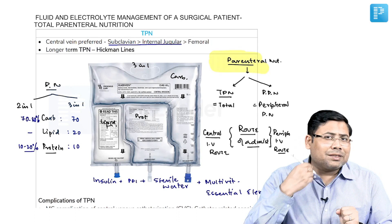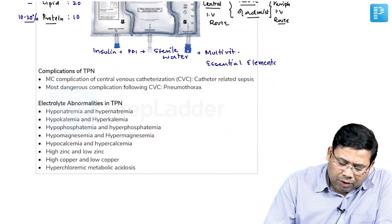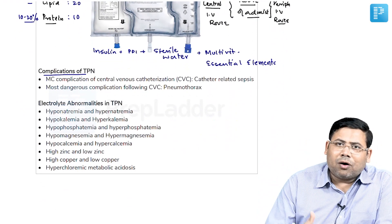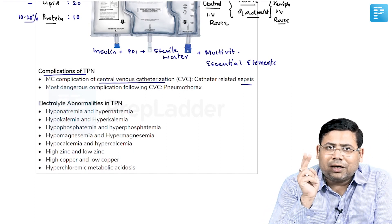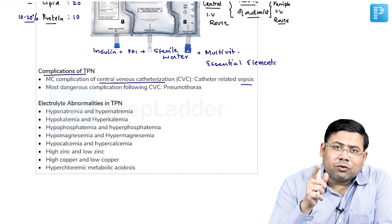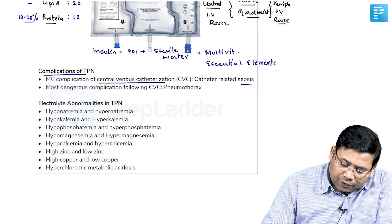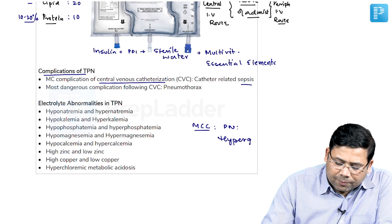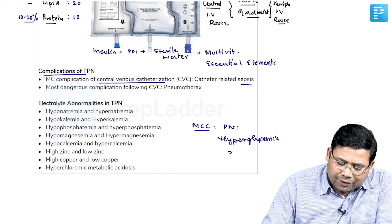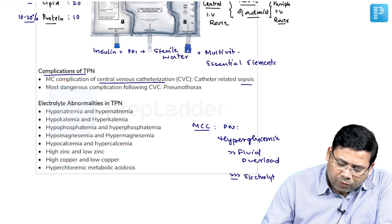Parenteral nutrition is given over 18 to 20 hours. Regarding complications: the most common catheter-related complication is sepsis, which is why we cut 5 centimeters of the catheter tip and send it for culture. The most dangerous complication of catheter insertion is pneumothorax. The most common complication of parenteral nutrition overall is hyperglycemia, which ranks above fluid overload, which ranks above electrolyte imbalance — which can present as hypo or hyper.